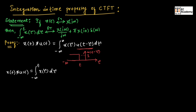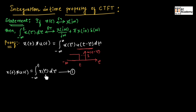So, what we have done? We have made this term 1 for tau ranging from minus infinity to t. That is why we have taken the integration from minus infinity to t. Let us call this equation number 1. If you observe equation number 1: x of t convoluted with u of t gives us integration from minus infinity to t of x of tau d tau. This term is the same as this term. So, if we find the Fourier transform of x of t convoluted with u of t, we should obtain this equation.